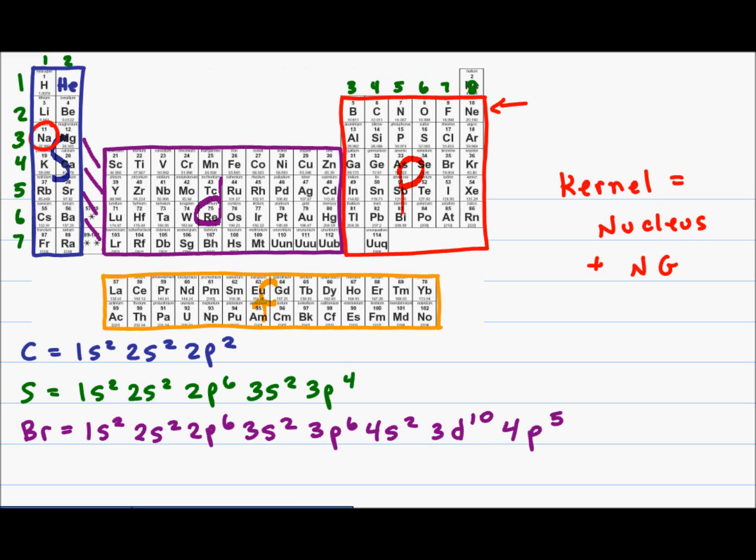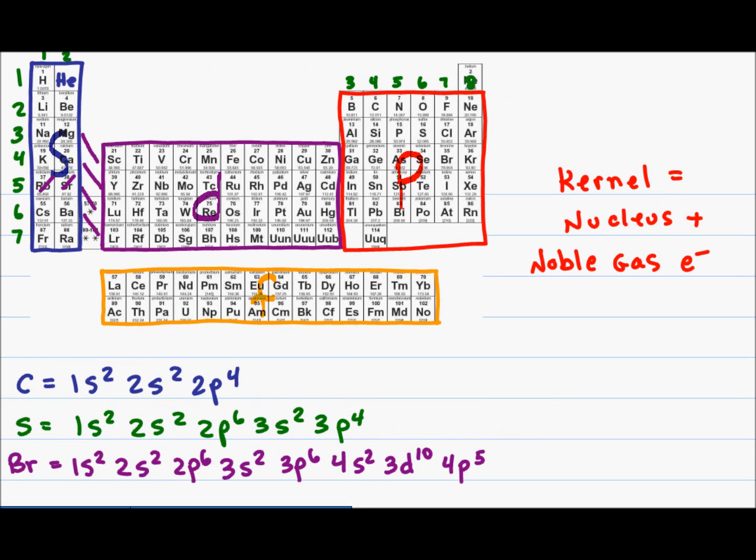The valence electrons of any atom are the outermost s and p electrons. Looking back at my carbon example, the previous noble gas is helium and that gives me the kernel, and the valence electrons are the s and p found in principal energy level number two. That gives me a condensed formula for carbon which is helium in brackets followed by 2s2 and 2p2.